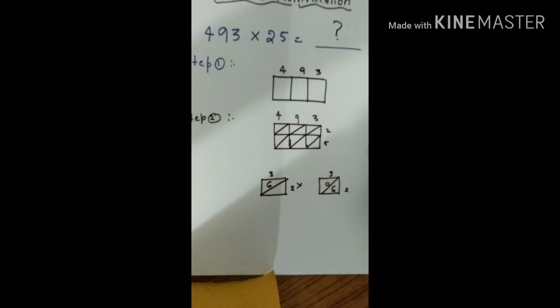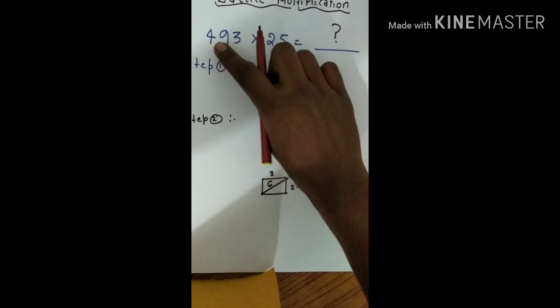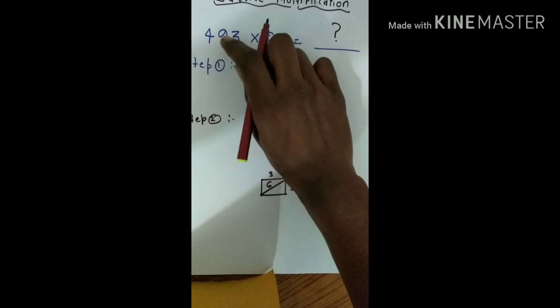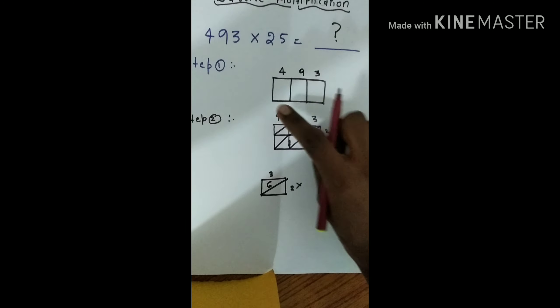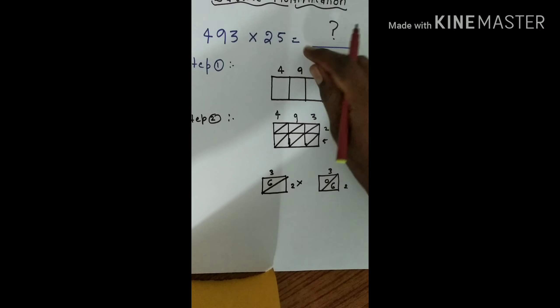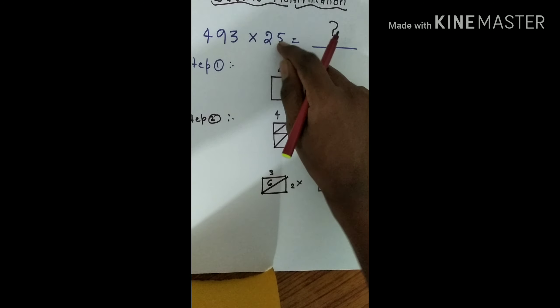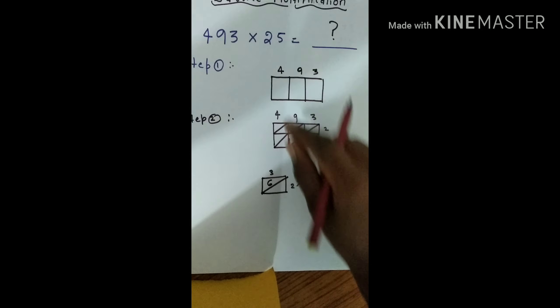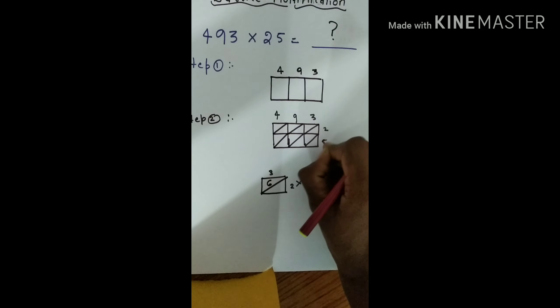Let's go with the head. Step one: we have 493, three digits - four, nine, and three. Draw three columns for 493. Step two: with the help of step one, draw how many digits are there - two, 2 and 5. So three columns and two rows.